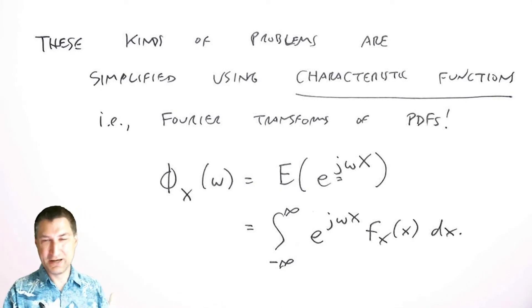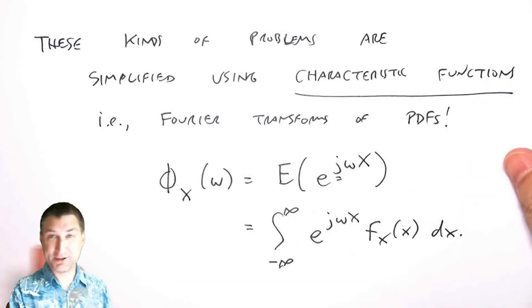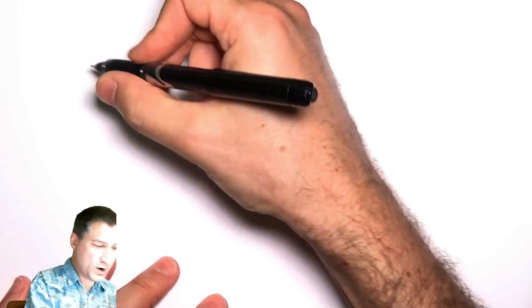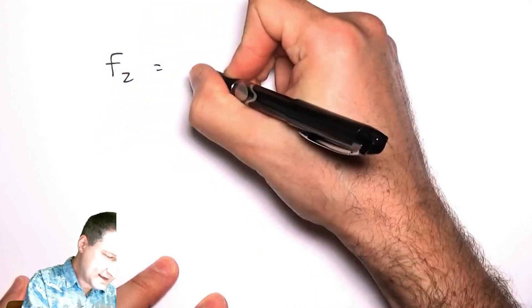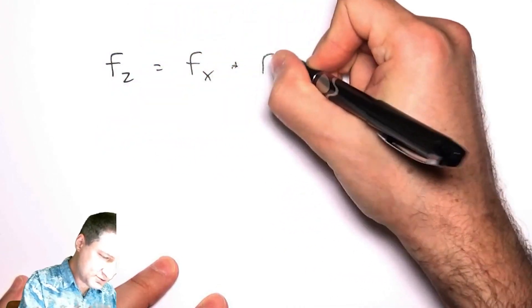I mean there may be a minus sign here if we're talking about the Fourier transform, and there are one or two pi factors around there. But fundamentally this is the Fourier transform of the PDF.